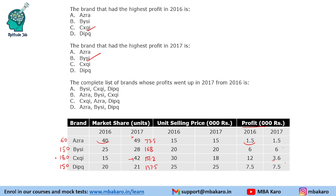The last question asks for the complete list of brands whose profits went up in 2017 from 2016. This could have been answered without all the calculations. For A, B, and D the profit per unit remained the same while the number of units increased, so their profits went up. For CXQI the market share increased significantly but the profit per unit decreased sharply — from 12,000 to 3,600 — so 42 × 3.6 = 151.2 compared to 15 × 12 = 180, which is a decrease. So the answer is Azra, YC, and DIPQ.